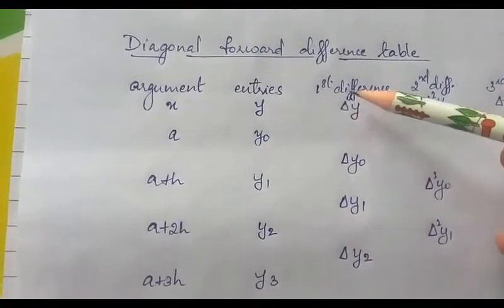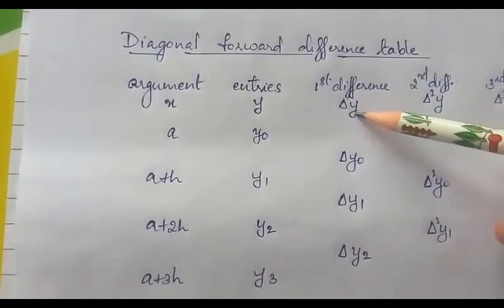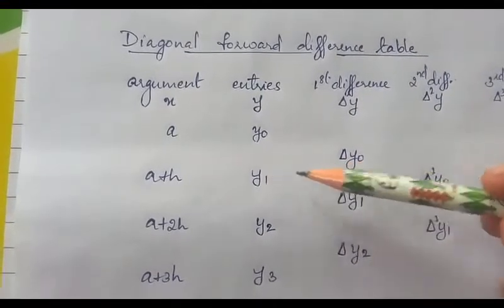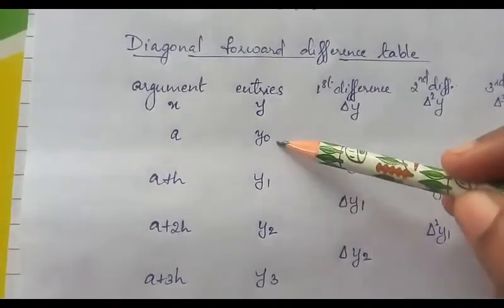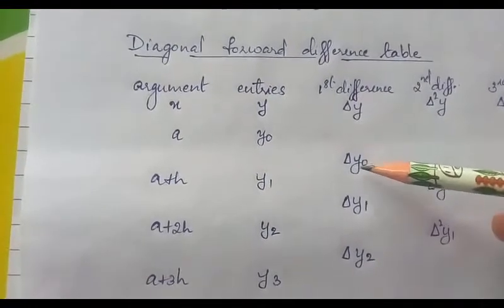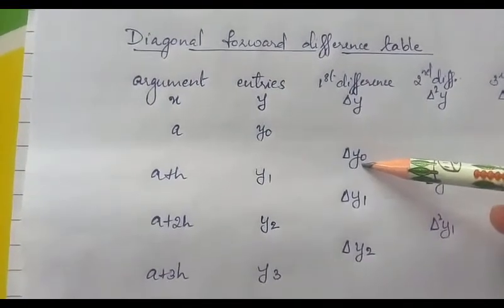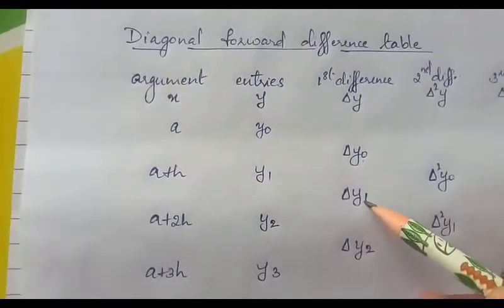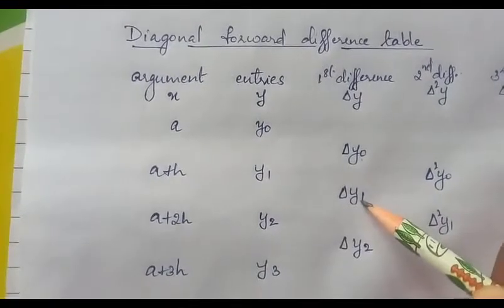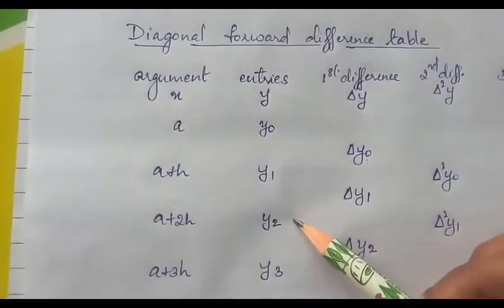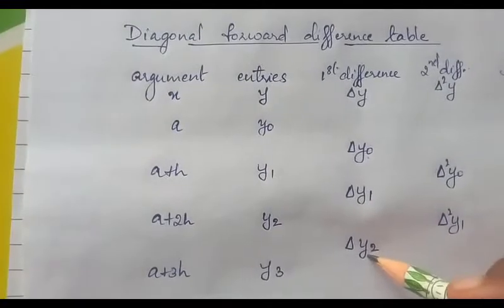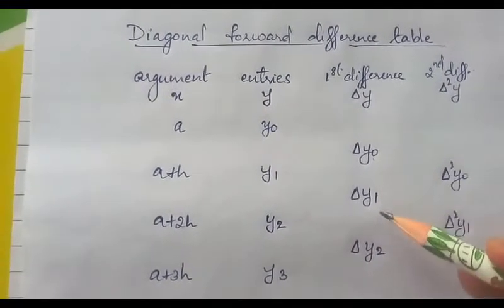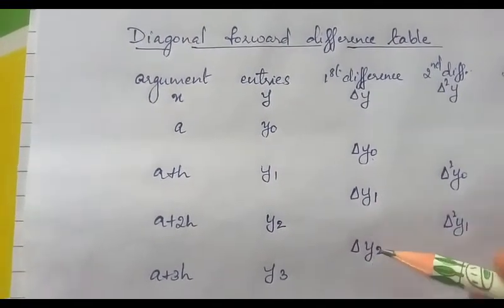The first forward difference delta y is defined as: y1 minus y0 is equal to delta y0. Like that, y2 minus y1 is equal to delta y1, and y3 minus y2 is equal to delta y2. So these are the first forward differences.